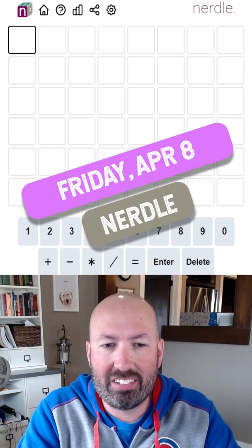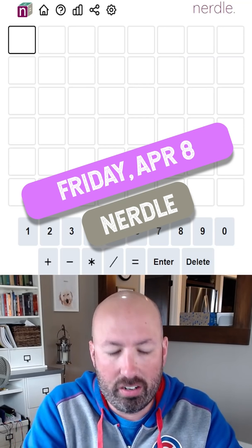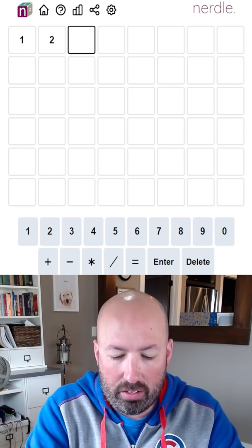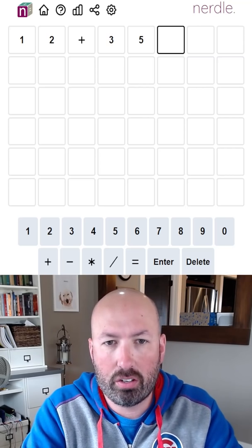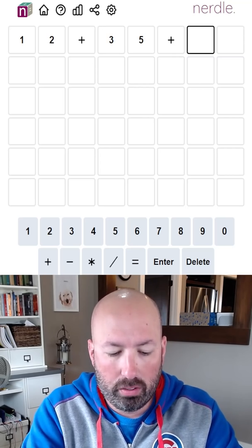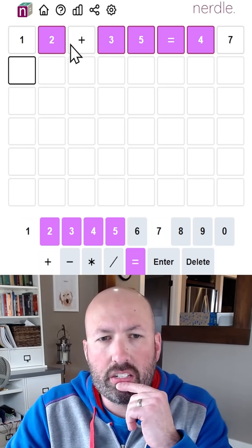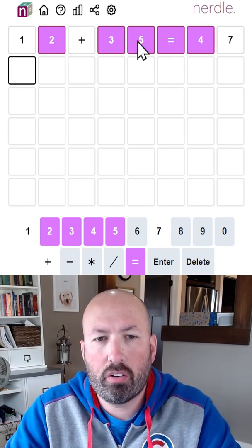All right, I've had a few requests to look at today's Nerdle because they said it was hard. So I'm just going to start with my usual 12 plus 35 equals 47. Okay, so we got a bunch of the stuff, but it's in the wrong spot.